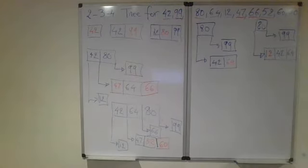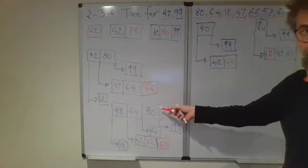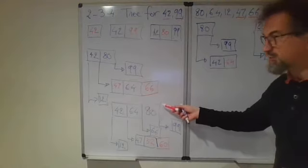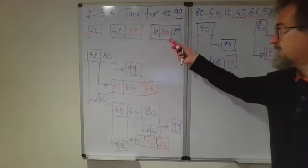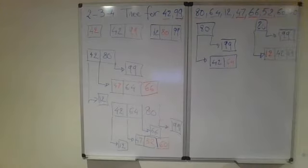Now the last number, 50, has to be inserted into this tree, where the root is a four-node. As soon as you encounter a four-node, like we did here, we splitted it. So we're going to split this root.